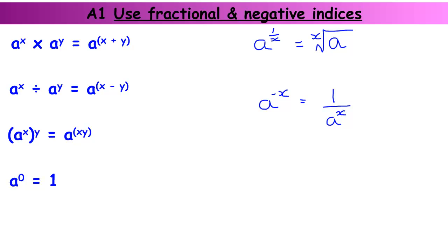If I have any number to the power of another number, multiplied by another number that has the same base number — in this case 3 — the powers don't have to be the same, then I can just add the powers. So 3 to the power of 4 times 3 to the power of 5 is 3 to the power of 4 plus 5, which is 9.